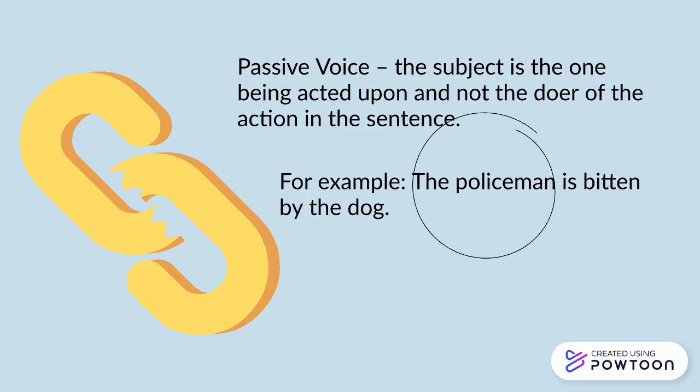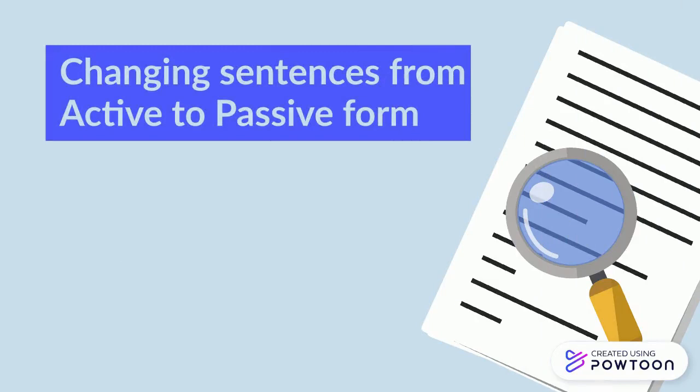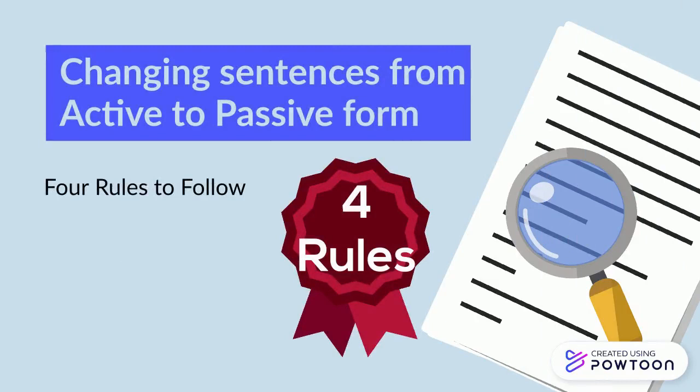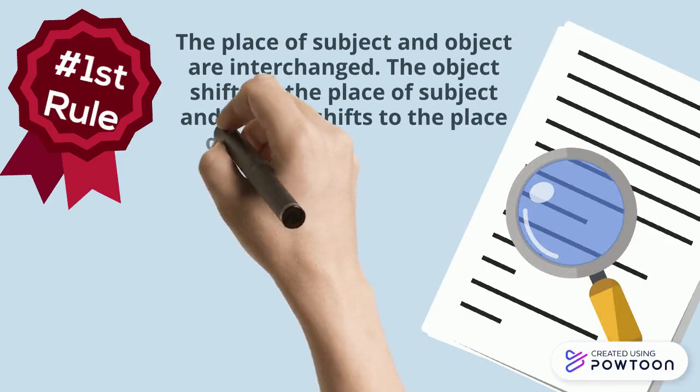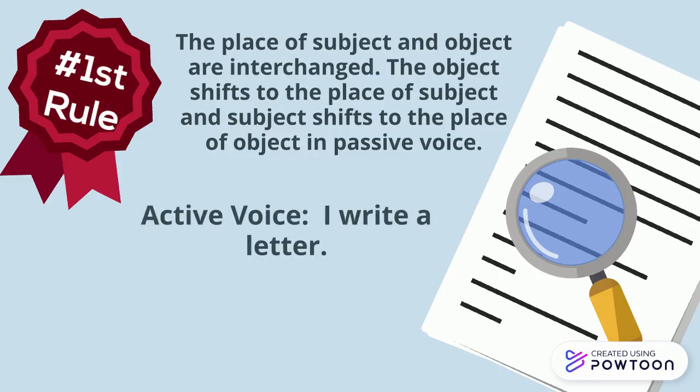In changing sentences from active to passive form, there are only four rules to follow. First rule: the place of the subject and object are interchanged. The object shifts to the place of the subject, and the subject shifts to the place of the object in passive voice. We have here an active sentence.